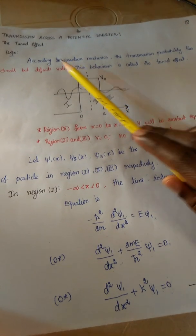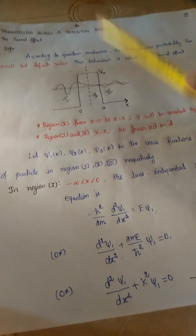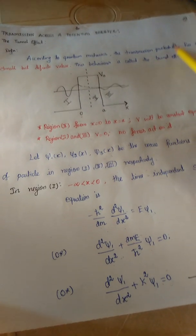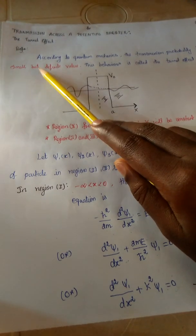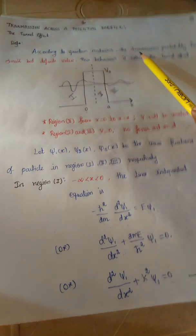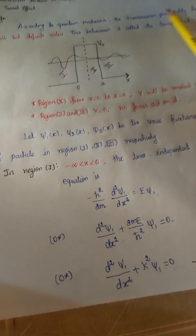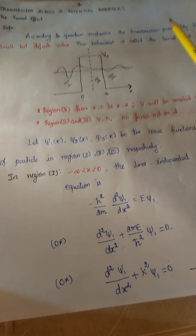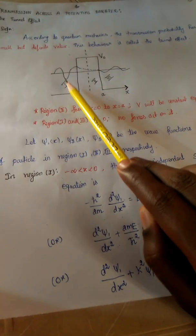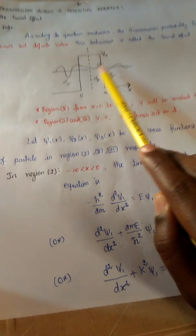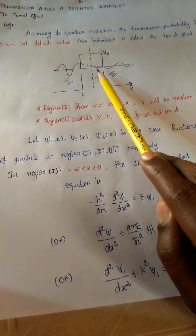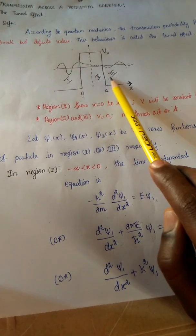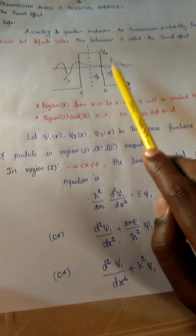What is the tunnel effect? According to quantum mechanics, the transmission probability has a small but definite value. What is the transmission probability? The transmission probability is defined as the square of the ratio between the transmitted and incoming probability amplitude. The transmission probability can be derived from the Schrödinger wave equation.